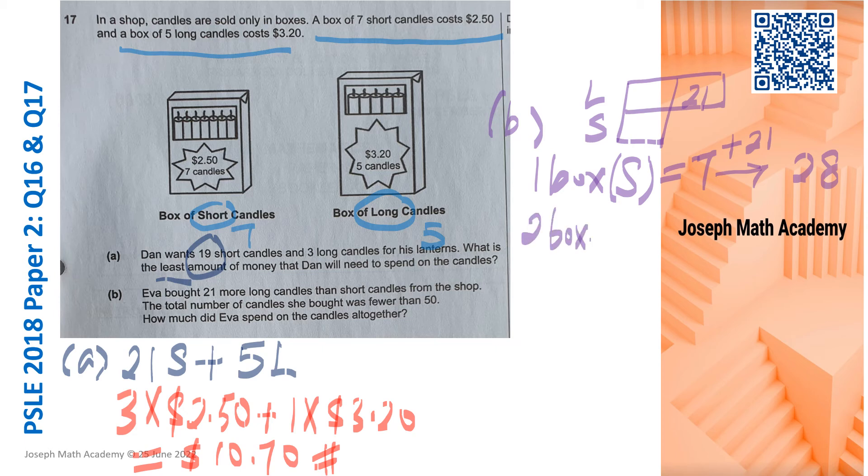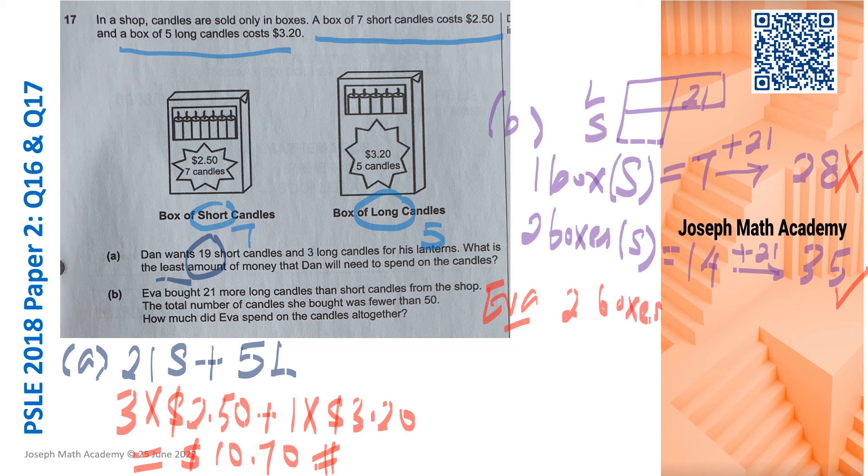Let's move on to the next multiples. So let's say two boxes of short candles. So two times seven, that gives us 14, buy another 21, must be 21 more, right? That gives us 35. And hooray, 35 is a multiple of five. So this one cannot, this one correct. So in other words, Eva, she bought two boxes of short candles and seven boxes of long candles.